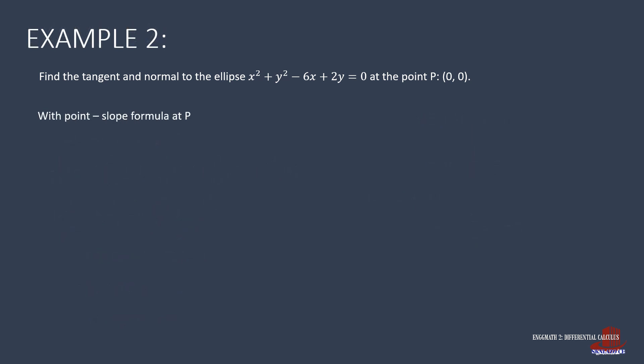For the tangent line, using the point-slope formula at point (0, 0), we plug in those coordinates to get y = 3x. The normal line is the negative reciprocal of the coefficients, giving 3y = x.